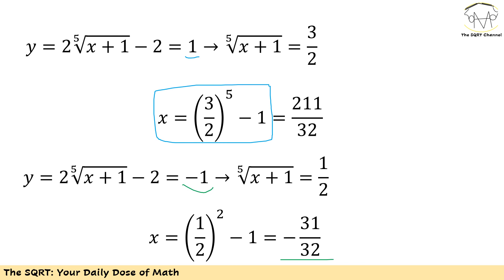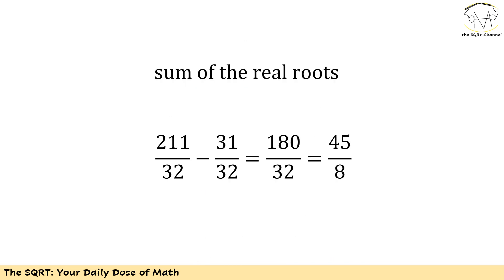Basically I'm going to add 211 over 32 and negative 31 over 32. I will end up with 180 over 32, and after simplification we will see 45 over 8 as the final answer.